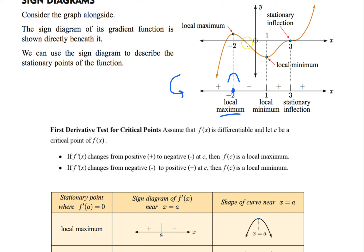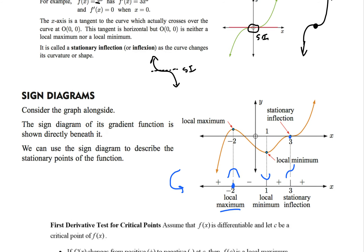When you have a minimum, it's going down then up — decreasing then increasing. You go from negative to positive, so it's a local minimum. A stationary inflection is when the sign doesn't change. You look at it — it's going up and then going up again: plus, plus. That's a stationary inflection. Same if it's decreasing then decreasing — it doesn't change signs, so it's also a stationary inflection.